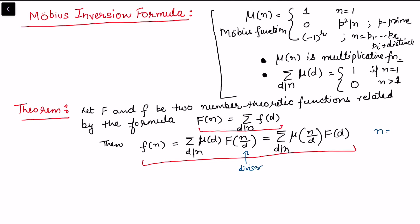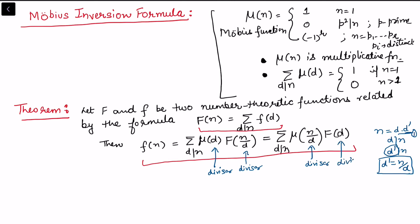Notice that n/d is also a divisor of n. If we write n = d · d', then d divides n and d' = n/d also divides n. So both d and n/d are divisors of n, and we may write either one in the summation. This is why the two equivalent expressions are the same — both run over d dividing n. This equivalence will also help us prove that if F is multiplicative then f is also multiplicative.